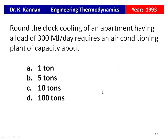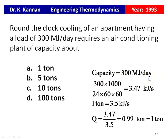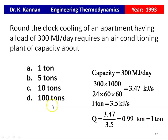From the 1993 question paper: round-the-clock cooling of an apartment with a load of 300 MJ per day requires an air conditioning plant of capacity — options: 110, 510, 1010, or 110. Converting: 300 × 1000 kJ / (24 × 60 × 60 s) = 3.47 kJ/s. Since 1 ton of refrigeration = 3.5 kJ/s, the required capacity = 3.47 / 3.5 ≈ 1 ton, corresponding to option 1 ton capacity.